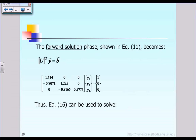After the first step is done, the second step is the forward solution phase. In this step, we know matrix U already. The equation is U-transpose times Y equals B, where B is given. The objective of the forward solution phase is to figure out the intermediate vector Y. The matrix U-transpose, unknown vector Y, and known vector B are all laid out.